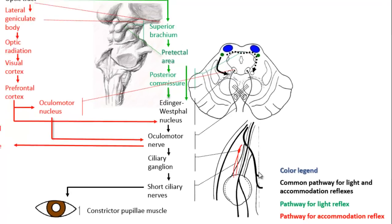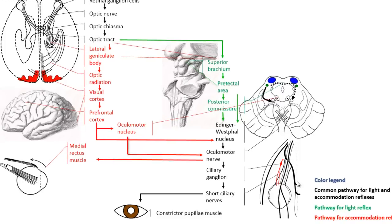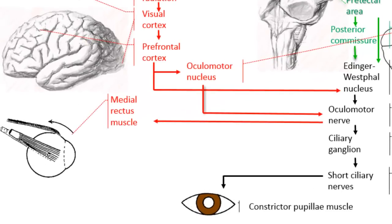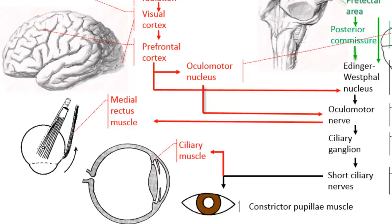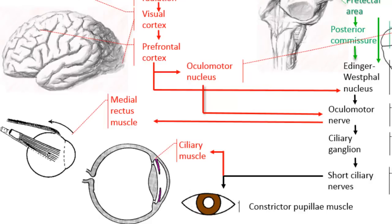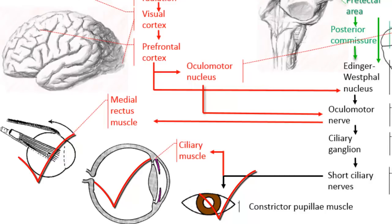Postganglionic fibers arising from the ciliary ganglion pass with the short ciliary nerves to supply the constrictor pupilli muscle, same as in the light reflex. But here in the accommodation reflex, these postganglionic fibers also supply the ciliary muscle, which allows the lens to thicken. Therefore, the three requirements to fulfill the accommodation reflex are achieved: pupillary constriction to sharpen the image on the retina, convergence of the optic axis, and increased convexity of the lens to increase the refractive power.